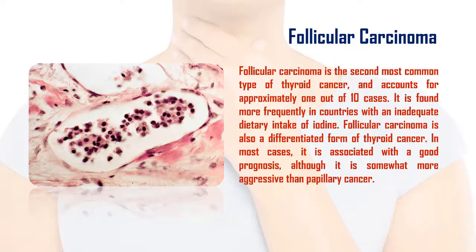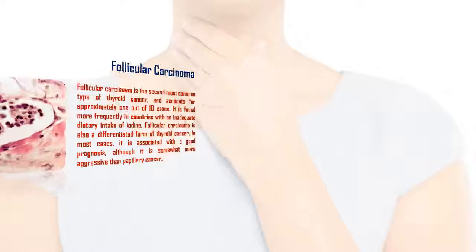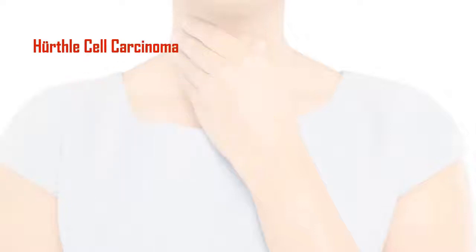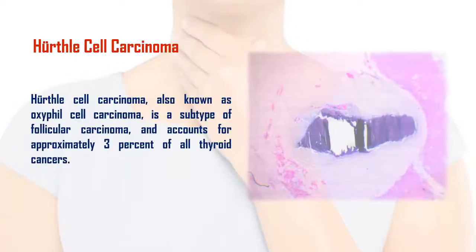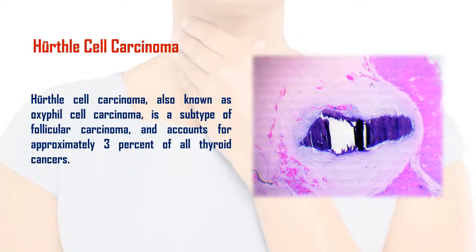Hürthle cell carcinoma, also known as oxyphil cell carcinoma, is a subtype of follicular carcinoma and accounts for approximately 3% of all thyroid cancers.